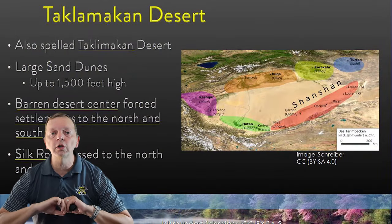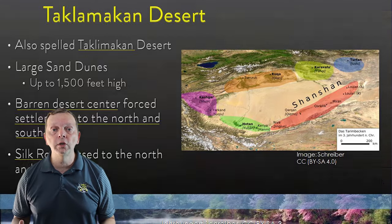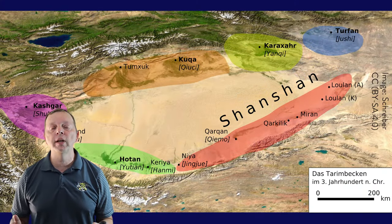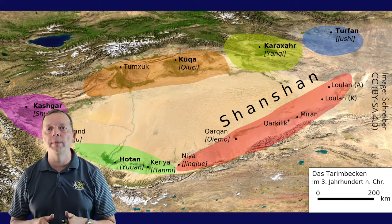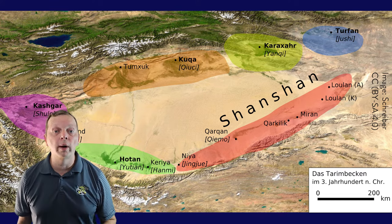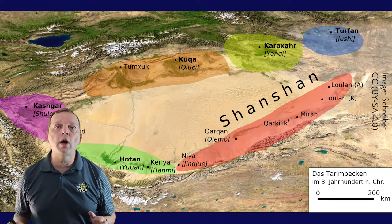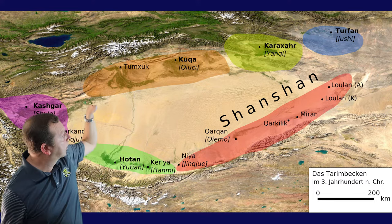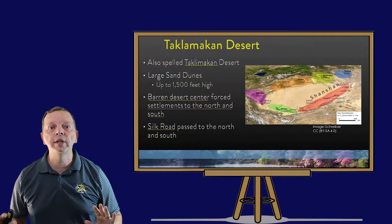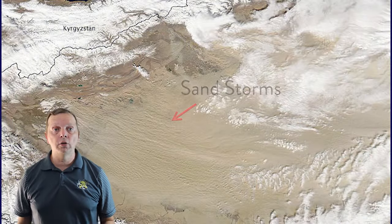These sand dunes make up 85% of the desert, whose interior is largely devoid of vegetation. When the area was first inhabited, people settled in the northern and southern portions, as a map of civilization around the 3rd century AD depicts. The Silk Road also made its way around the north and south of the desert, as traders did not dare cross it with all its sandstorms.